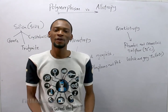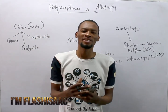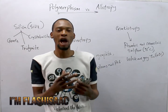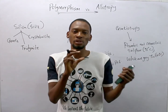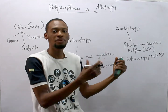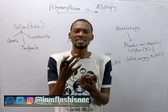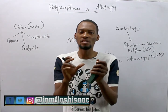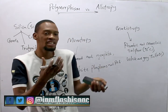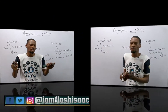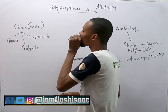Hello guys, welcome to Chemistry Class with Flash Isaac. Today I'll be taking you through the difference between polymorphism and allotropy. Polymorphism is the existence of different forms of a substance in the same physical state. For example, silica can exist in three forms.